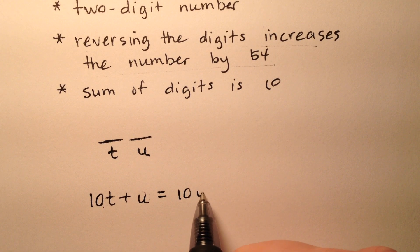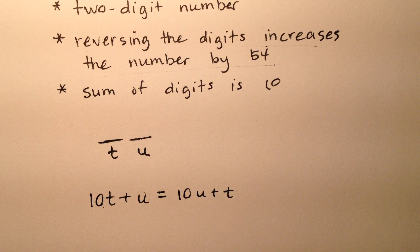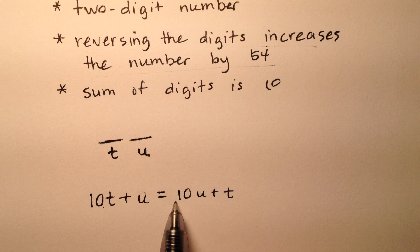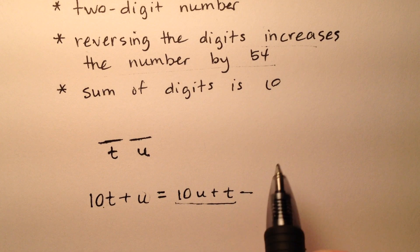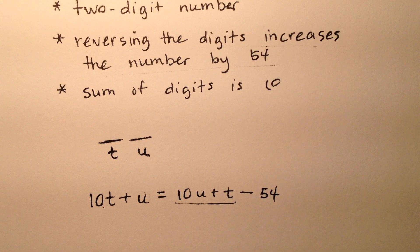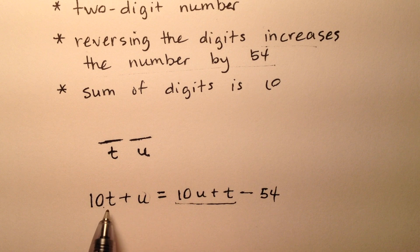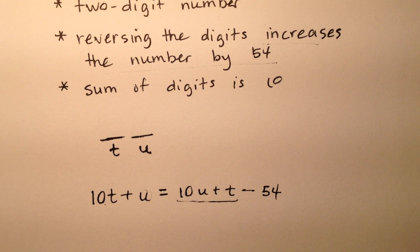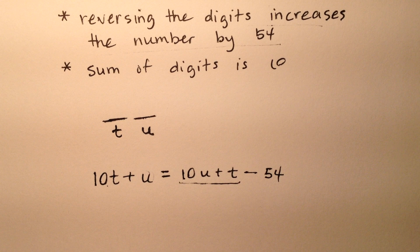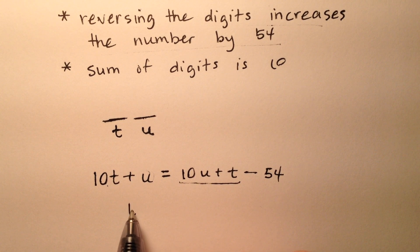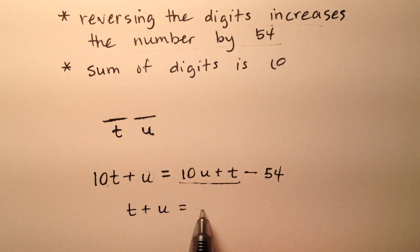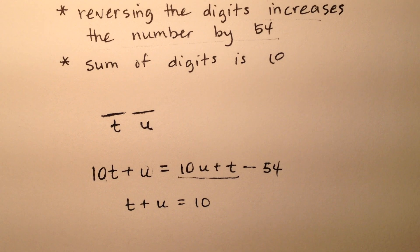So 10U plus T increases the number by 54. This number has been increased by 54, so if I subtract 54, these two expressions are equal. We also know the sum of the digits is 10, so T plus U equals 10.